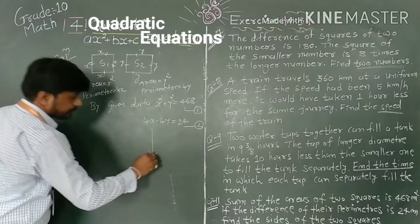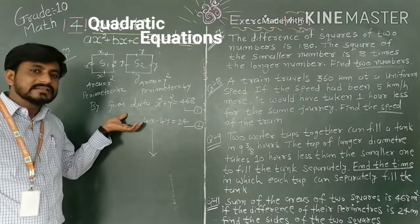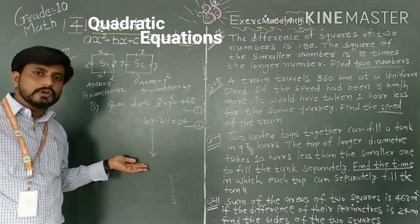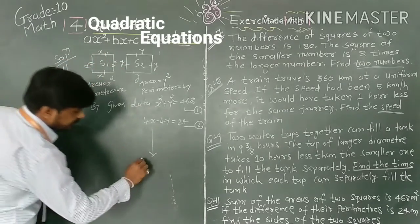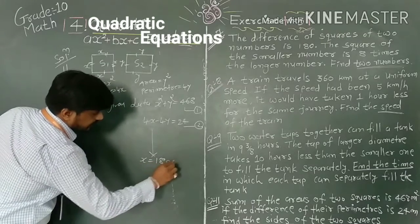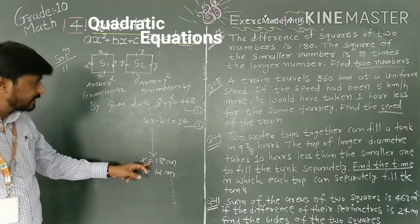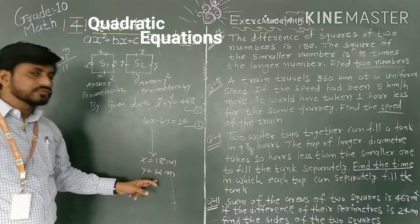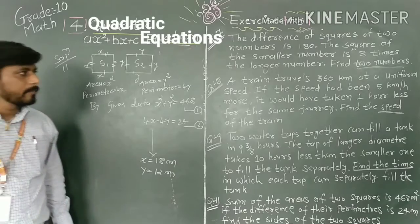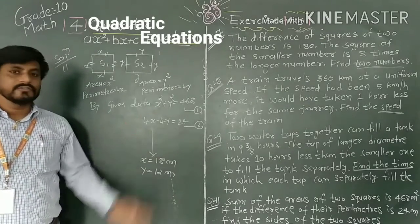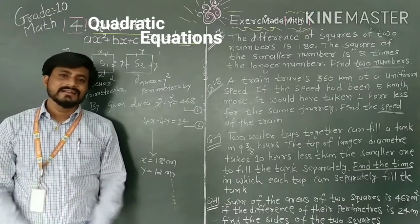Solve these equations by substitution, elimination, or cross multiplication — that is up to you. Find the value of x and substitute to get the answer: x = 18 meters and y = 12 meters. The side of S1 is 18 meters and the side of S2 is 12 meters. Do this yourself at home. I hope you all understood. If you have any doubt, ask me in our doubt session. Thank you very much.